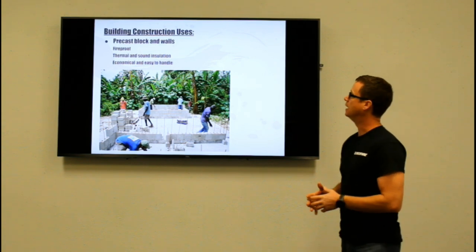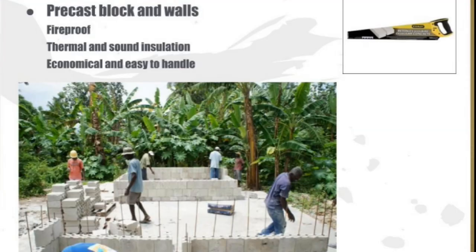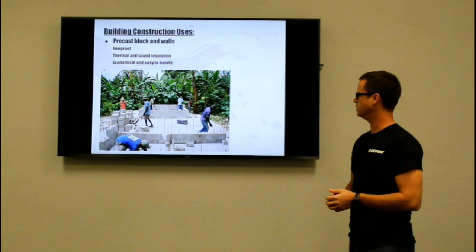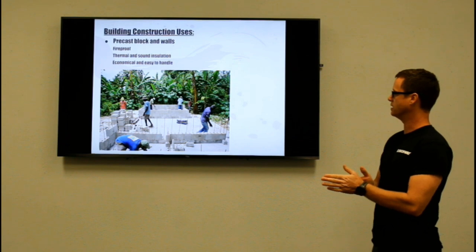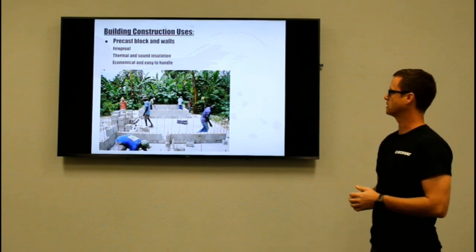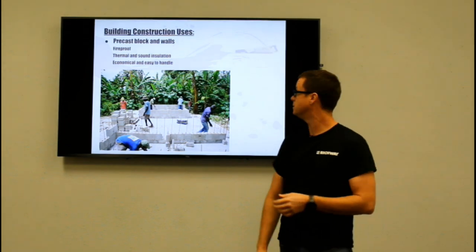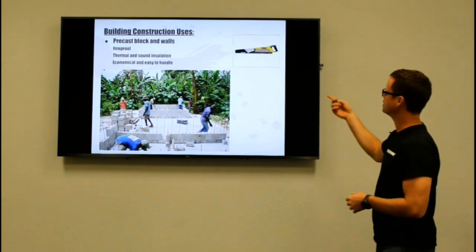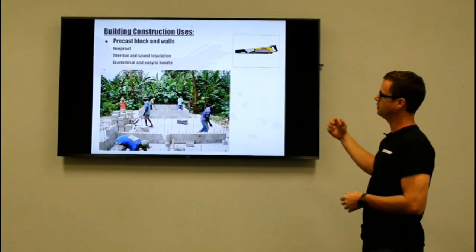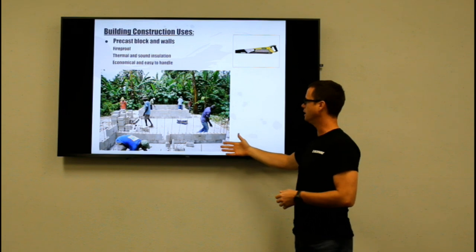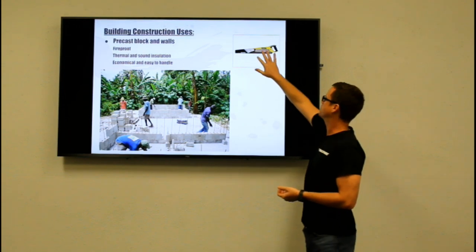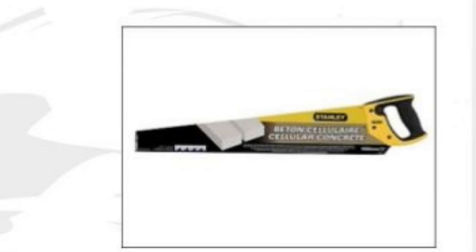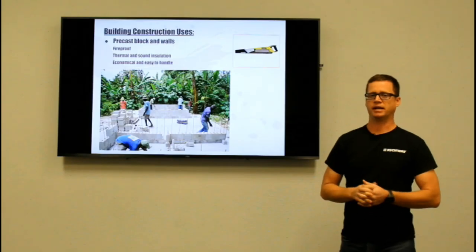Precast blocks and walls — the advantages are it's fireproof, thermal and sound insulation are increased, and it's economical and easy to handle. This photo shows some homes being built in Haiti; we worked with a nonprofit that was building homes down there using precast cellular concrete blocks. One thing to point out is that in the U.S. building homes with cellular concrete blocks and panels is not very common, however it's so common outside of the U.S. that Stanley Hand Tools actually makes a hand saw designed specifically for cutting cellular concrete blocks and panels on job sites.